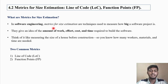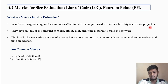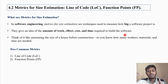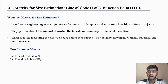In software engineering, metrics for size estimation is a technique used to measure how big a software project is. They give you an idea of the amount of work, effort, cost, and time required to build a software. Think of it like measuring the size of a house before construction — you determine the area before estimating time and cost.